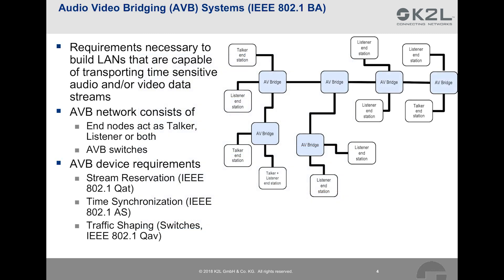AVB is a set of four different standards, including the overarching standard IEEE 802.1BA. As Ethernet is a switched network technology that inherently does not offer the capability to transport time-sensitive data, something needs to be done to give this capability to the network. Therefore, the IEEE 802.1BA standard defines profiles that select features, options, configurations, defaults, protocols and procedures of bridges, stations and LANs that are necessary to build networks capable of transporting time-sensitive audio and/or video data streams.